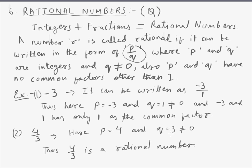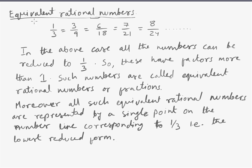Similarly, 4 by 3 is also rational as P becomes 4 and Q becomes 3, not equal to zero. And 4 and 3 are co-prime numbers.